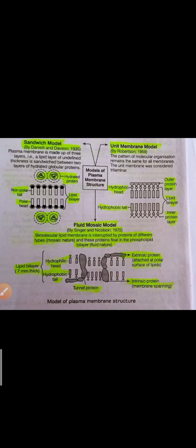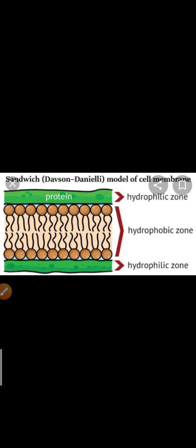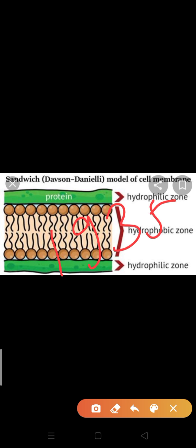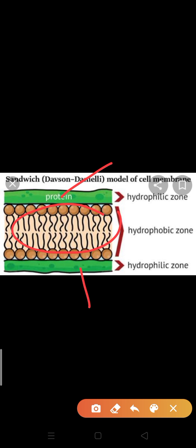On screen you can see different models related to the plasma membrane, which we will go through one by one. The first model is the sandwich model of the cell membrane, given by Danielli and Dawson in 1935. According to them, the plasma membrane is made up of three layers: protein, lipid, then protein. The green color areas represent protein and the middle portion represents lipid.